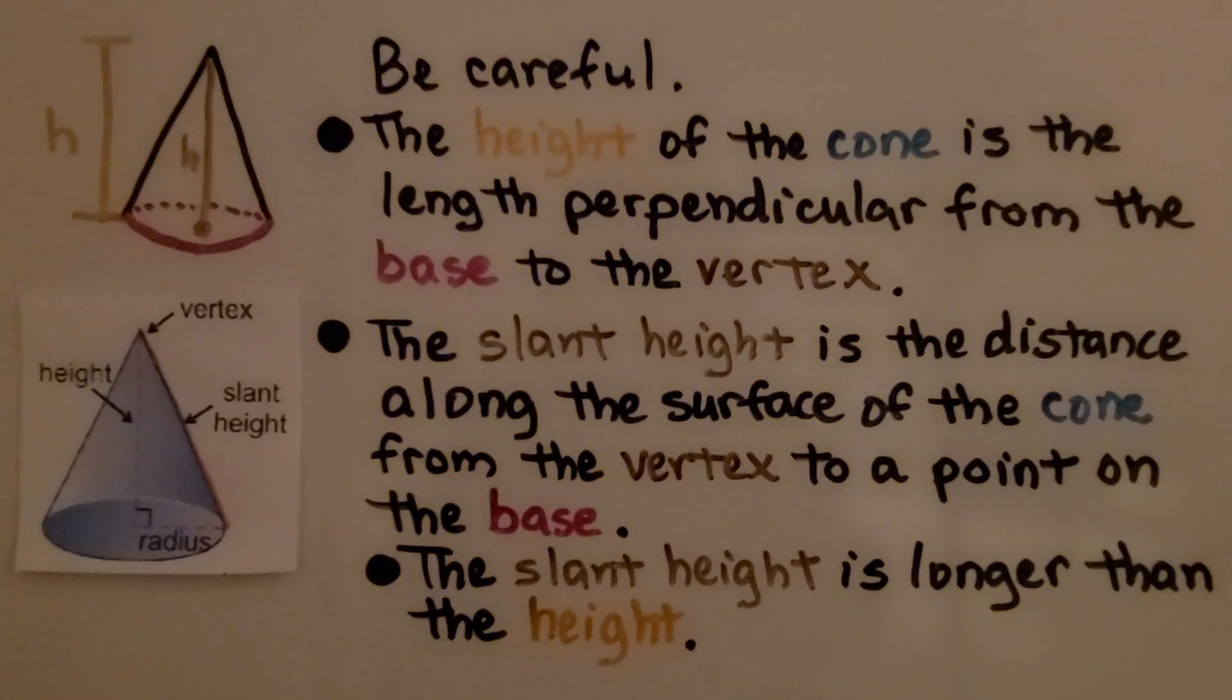Now we need to be careful. The height of the cone is the length perpendicular from the base to the vertex. The slant height is the distance along the surface of the cone from the vertex to a point on the base. The slant height is longer than the height. You can see in this diagram, here's the height, here's the slant height.